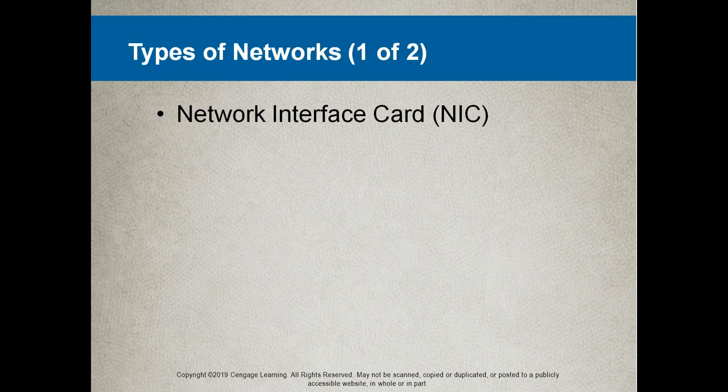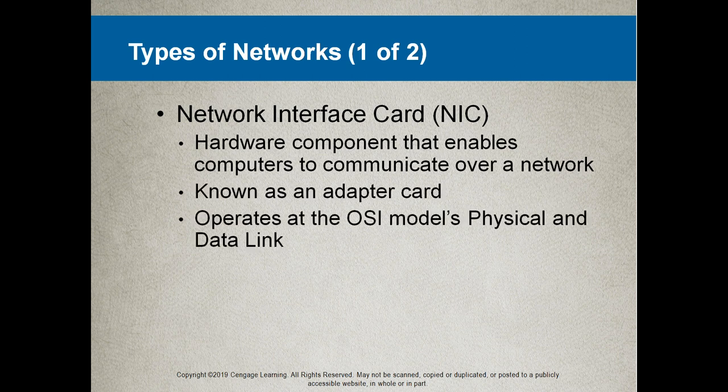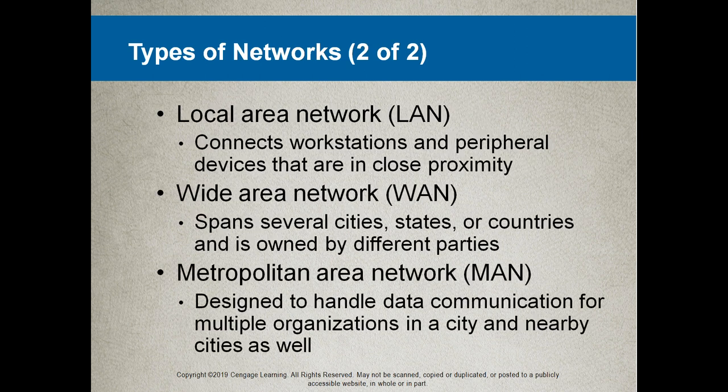For your computer to interface to a network, it needs a network interface card — the hardware component that enables a computer to communicate over a network. It is known as an adapter card and operates at the OSI model's physical and data link layers.